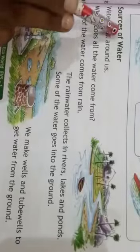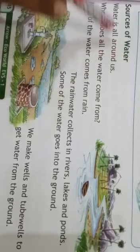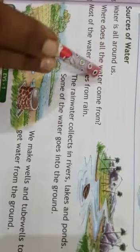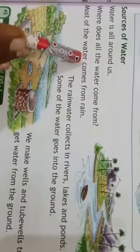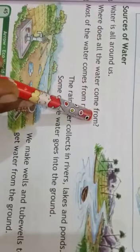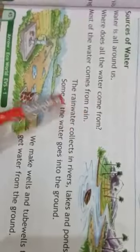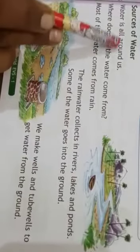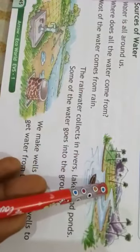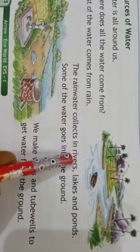Now, sources of water. From where do we get water? Water is all around us. Where does all the water come from? Most of the water comes from rain. Rainwater collects in rivers, lakes, and ponds.